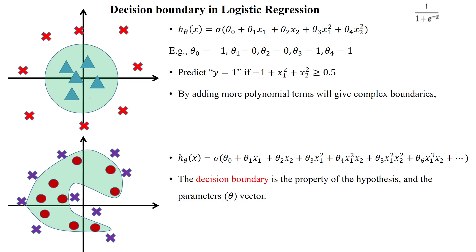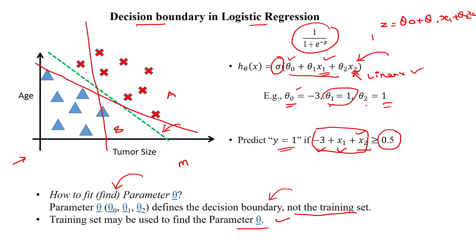And one more decision boundary to look at here: our decision boundary is a straight line for the linear dataset.